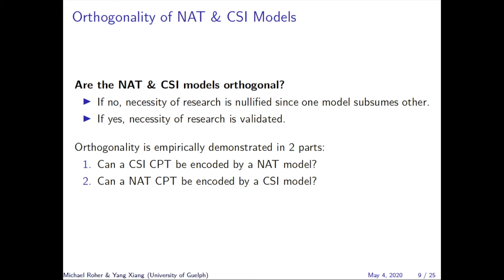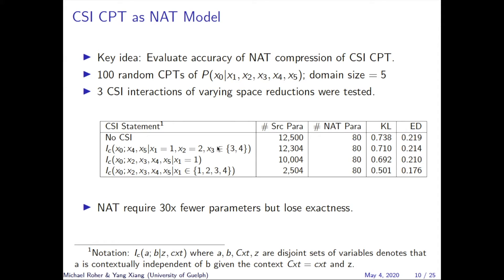We empirically demonstrate the orthogonality of the models in two parts. First, we test if a CSI CPT can be encoded by a NAT model, and second, we test if a NAT CPT can be encoded by a CSI model. To evaluate if a CSI CPT can be encoded as a NAT model, we tested 100 random CPTs, each with 5 parents and a uniform domain size of 5. For each CPT, we created 3 new copies, each encoding a different CSI interaction, resulting in 100 seed CPTs per CSI interaction. We then ran NAT compression on each CPT and evaluated the accuracy of the compression by Euclidean distance and KL divergence.